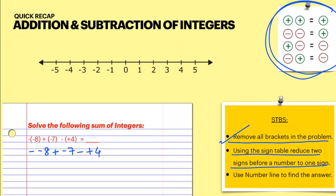For eight, the two signs are minus minus — from the sign table, minus minus becomes plus, so we write plus eight. For seven, the signs are plus minus — plus minus becomes minus, so it becomes minus seven. For four, the signs are minus plus — minus plus becomes minus, so it becomes minus four.